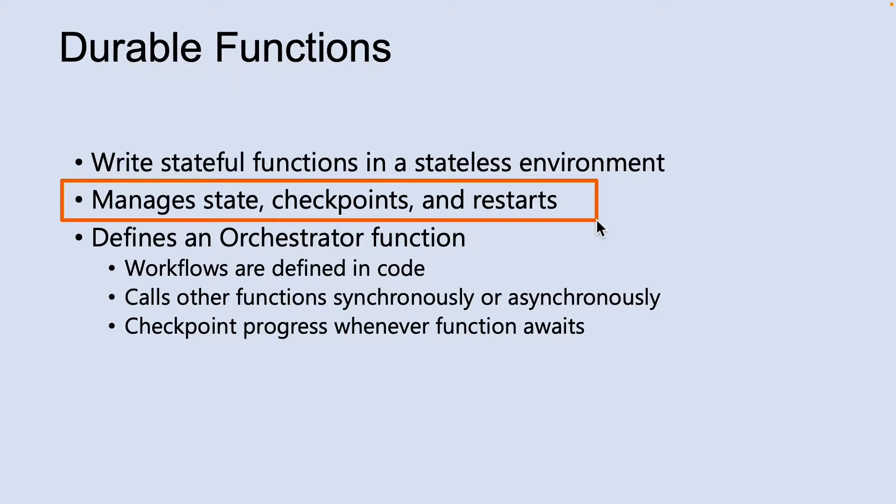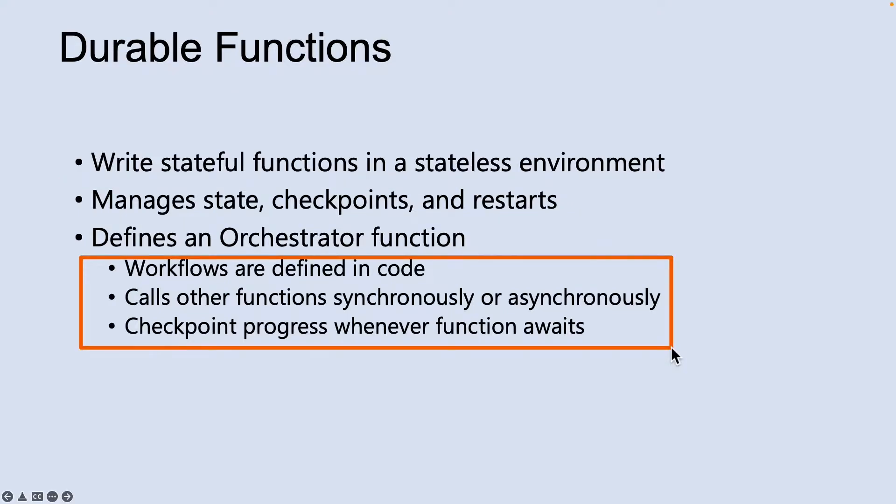Let's look at some of the advantages of Orchestrator Functions. They define workflows in code, so no JSON schemas or designers are needed. They can call other functions synchronously and asynchronously, and output from called functions can be saved to local variables. They can also automatically checkpoint their progress whenever the function awaits, so local state is never lost if the processor recycles or the virtual machine reboots.